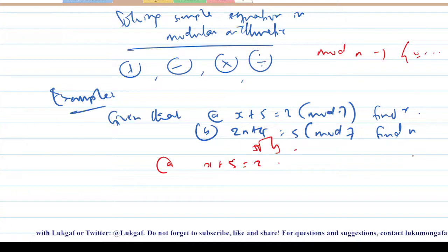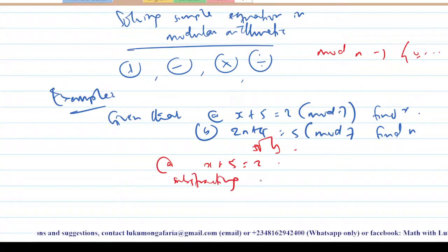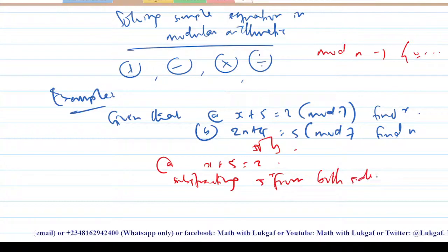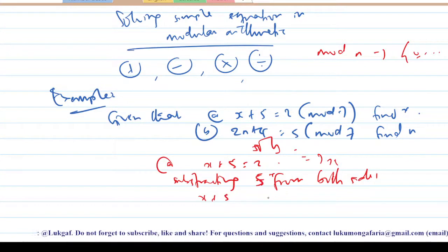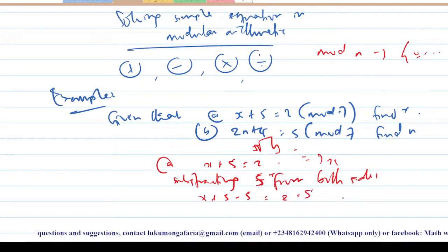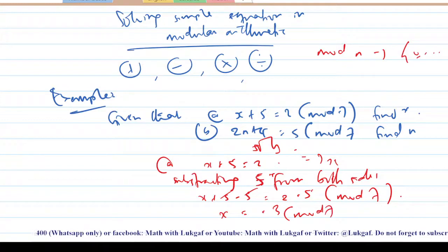We want to find the value of x, so we make x the subject of the formula by subtracting 5 from both sides — adding minus 5 to both sides. What you do for the left-hand side you must also do for the right-hand side. Working in modulo 7, minus 5 minus 5 gives zero, so x equals minus 3 mod 7.